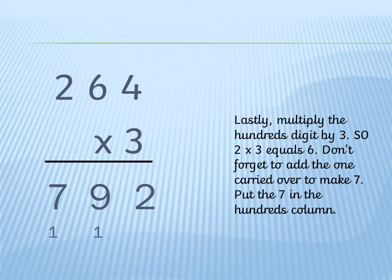Finally we multiply the hundreds digit by 3. So 2 times 3 equals 6. Make sure you add the 1 carried over to 6. So 6 plus 1 equals 7. Put the 7 in the hundreds column. Now you have your answer. 264 times 3 equals 792.